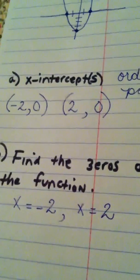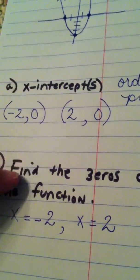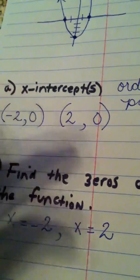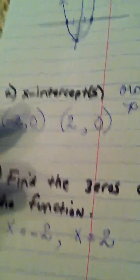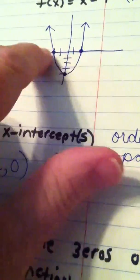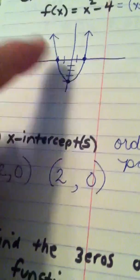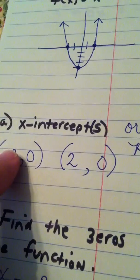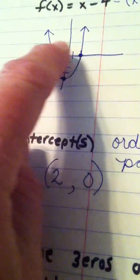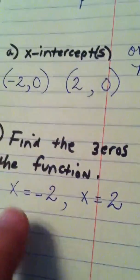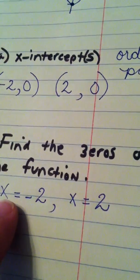So, what you need to understand, the concept of x-intercept and zeros are very, very intimately tied. All right? When I look at where the graph crosses the x-axis, those two ordered pairs are the x-intercepts. The x value alone where it touches is called the zero of the function.